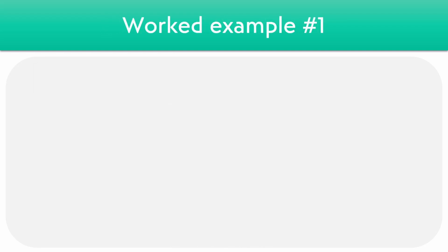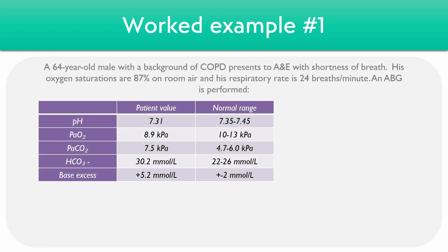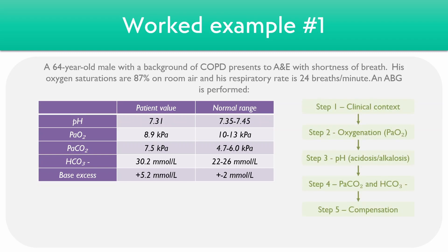Now that we know how to interpret ABGs, let's take a look at a couple of practice questions. The first involves a 64-year-old male with a background of COPD who presents with shortness of breath. His oxygen saturations are 87% on room air and his respiratory rate is 24 breaths per minute. For step one, looking at the clinical context, we can see that the patient has a background of COPD and slightly low saturations, which gives us an indication about what we can expect from the ABG results.